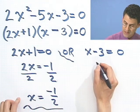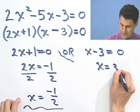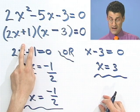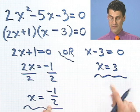And what's the other solution? I come back here and solve this and see x has to equal 3. So this quadratic actually has two solutions. We found it by factoring. One is minus a half and the other one is 3. If you want, you can check. Plug them both back in and see what you get.